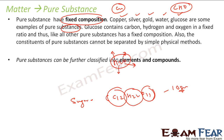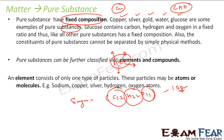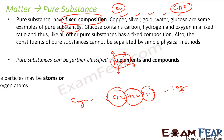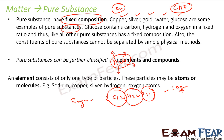Pure substance can further be classified into elements and compounds. Elements have only one type of particle. For example, sodium, copper, sulfur, hydrogen, oxygen — these have only one type of particle. Sodium will have only sodium, copper will have only copper, silver will have only silver.